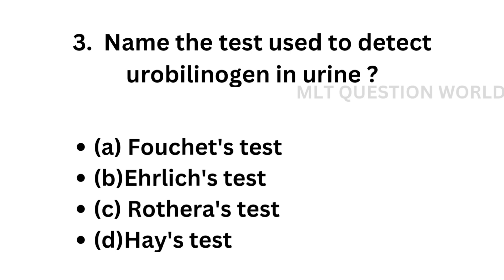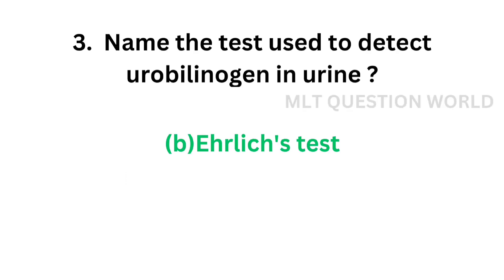Question number 3. Name of the test used to detect urobilinogen in urine: option A, Fauci's test; option B, Ehrlich's test; option C, Rothra's test; option D, Hayes test. The correct answer is option B, Ehrlich's test. Ehrlich's test is used for urobilinogen in urine.